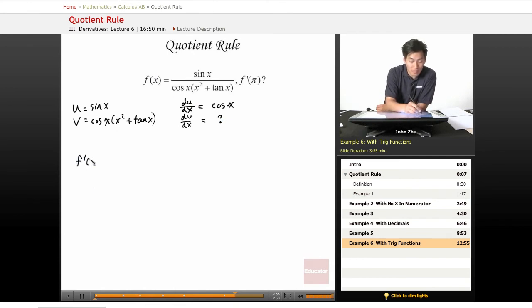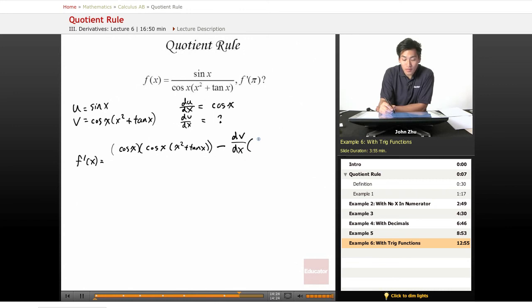Let's find the derivative of f of x. f prime of x equals derivative of u, so du dx cosine of x times the bottom portion, cosine of x times x squared plus tangent of x minus dv dx, which we don't know yet, so we'll just plug in dv dx times the top portion u, which is sine of x, and that all gets divided by cosine of x times x squared plus tangent of x squared.